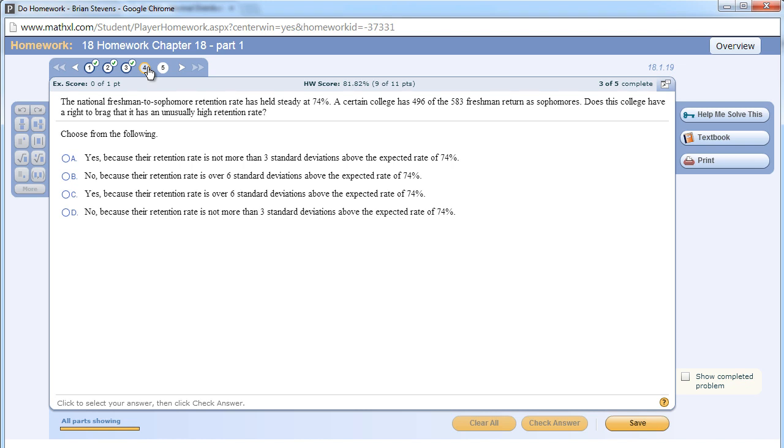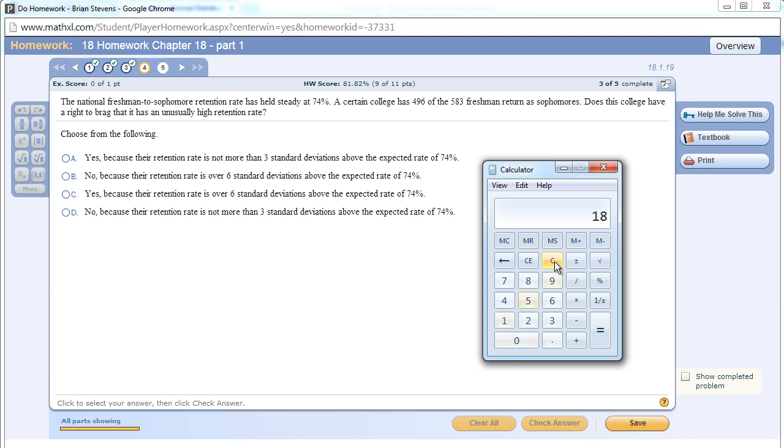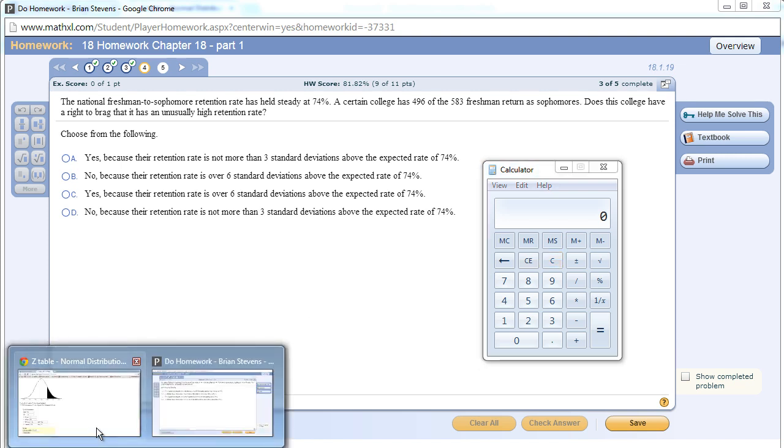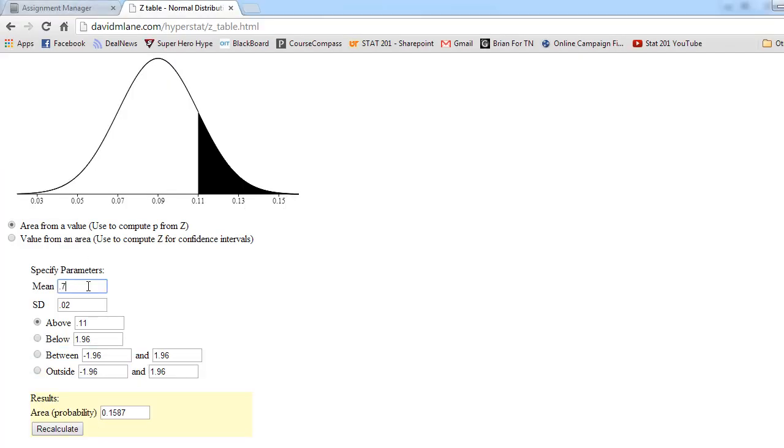A lot of people guess on this problem because it can be guessed, but I urge you to work on it and know how to do it because it'll help for the test. The national freshman to sophomore rate has held steady at 74%. A certain college has 496 of the 586 freshmen return as sophomores. Does this college have a right to brag? Let's look at what their percentage is: 496 out of 583 is 85%. Now what we have to do is say normally 74% would return, so 74% would return. That means our model is going to have 74% at the center.